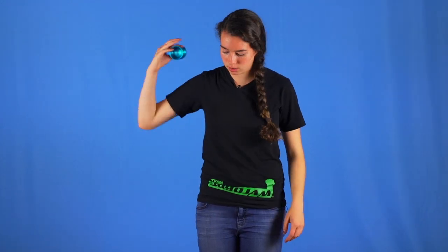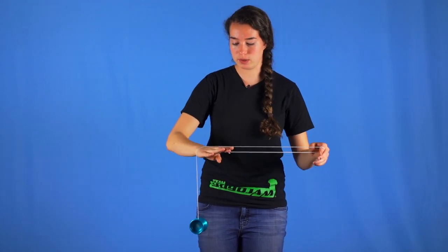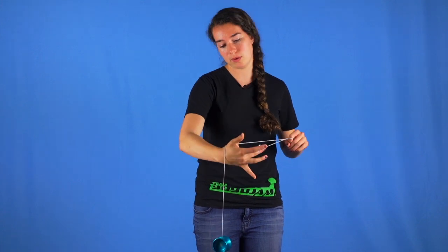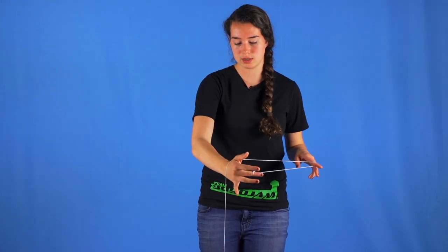To start the trick you are going to throw the yoyo like you would in wrist mount except stop halfway through when the string is draping over your wrist like that.